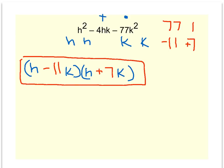Let's go ahead and check it just so we get used to that. It's a good habit to be into. Let's foil. h times h is h squared. h times a positive 7k is plus 7hk. Negative 11k times h is negative 11hk.